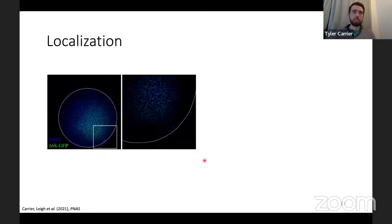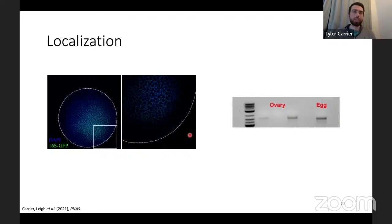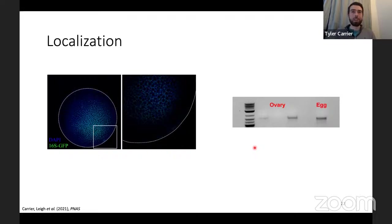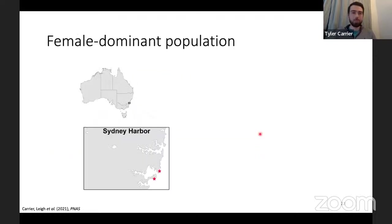We also did FISH on the eggs — because this bacterium was so abundant — and we can see it is spread throughout the egg, specifically between those lipid droplets. Because it was in the egg we assume it is vertically transmitted, so we also did PCR on the ovaries and found that this bacterium was in there. We do acknowledge that signal is a little weak; the ovary samples were taken after spawning because another lab was in Sydney at the time and we got the ovaries after, so it would be expected that this signal would be a little weak.